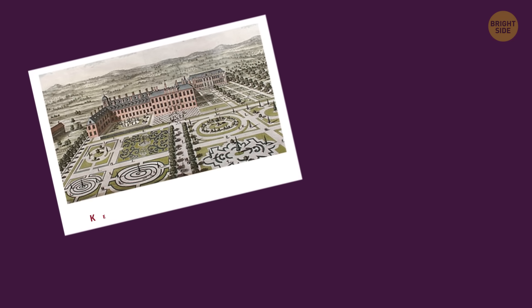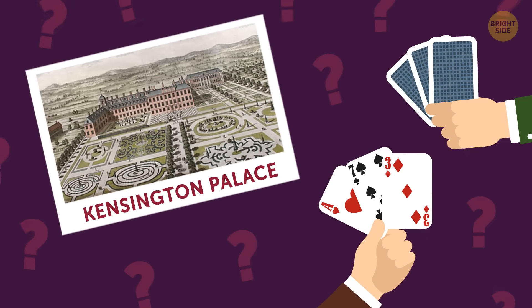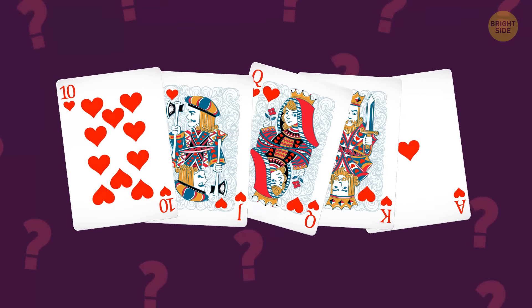And finally, there's this. What does Kensington Palace in London and a poker game have in common? Occasionally, there's a royal flush. Oh, come on, you could see that coming, couldn't you?